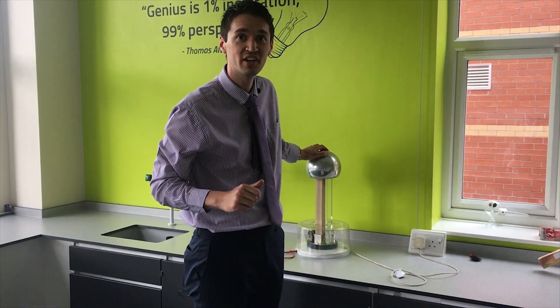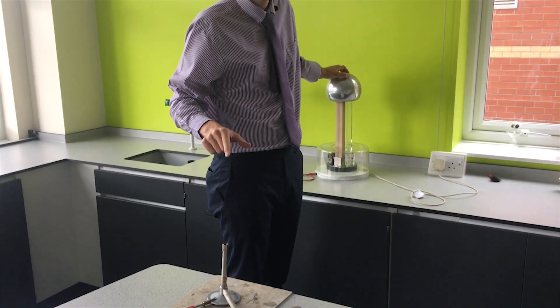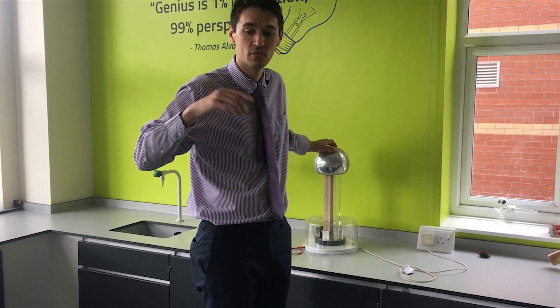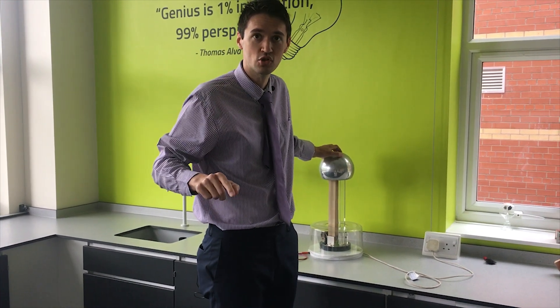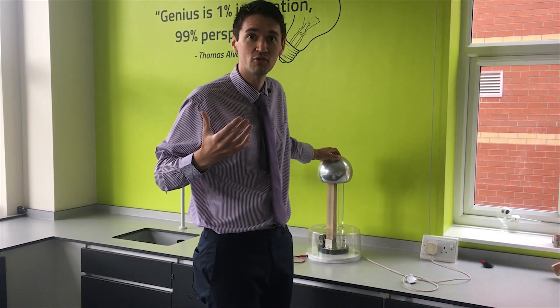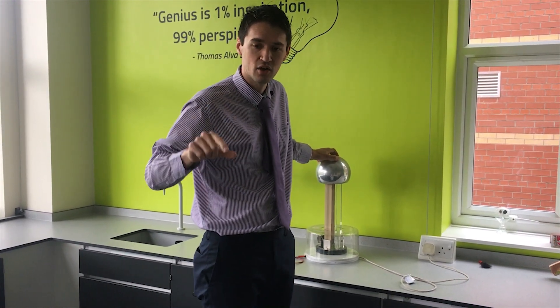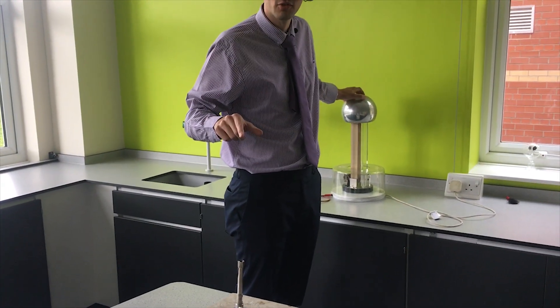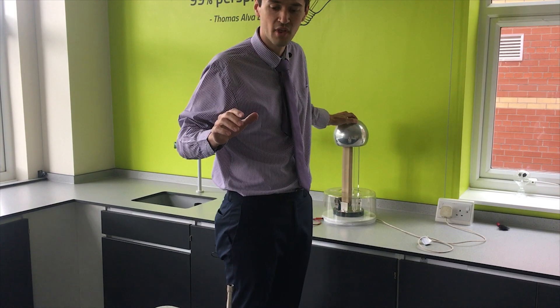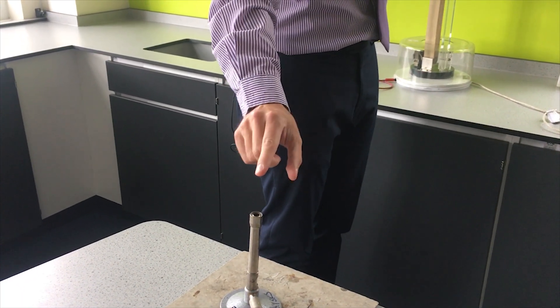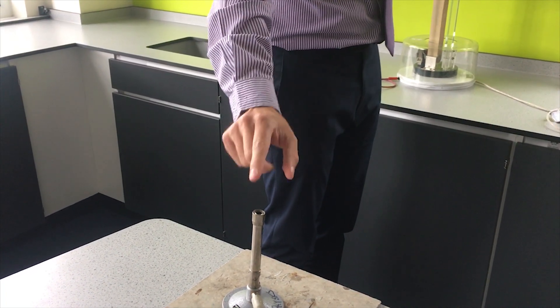There's something else cool you can do with a Van de Graaff generator. This Bunsen burner is at zero volts. I'm at a high voltage, so there's a high potential difference between those two objects. That should be enough of a potential difference to drive a current through the air, which is normally an insulator. With the gas tap on and a yellow flame, we should be able to send a current through and ignite the gas. Yes! Only a little bit of pain — it's all worth it. More physics magic.